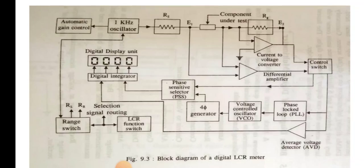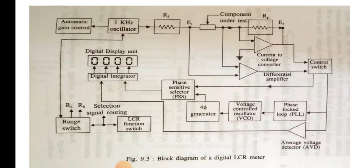The basic principle involves measuring the voltage across the component under test plus the current passing through it whenever the test signal is applied — through the one kilohertz oscillator. The measured voltage and current flowing through the component are both given to the digital integrator, which finally enables the output display unit to directly display the value of the test component.